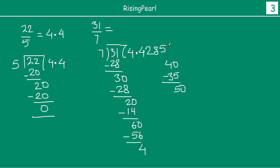40 minus 35 is 5. 0. 7 sevens are 49. 50 minus 49 is 1. 0. Now 7 ones are 7. So 10 minus 7 is 3. 30.